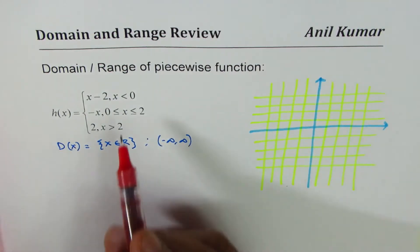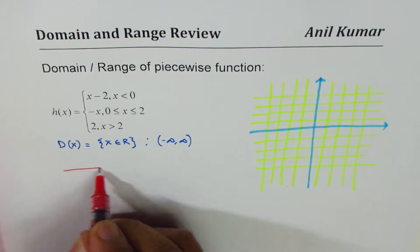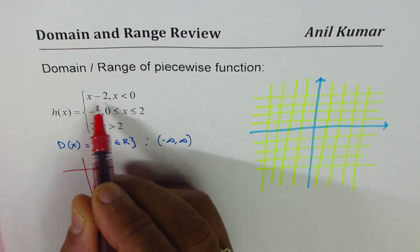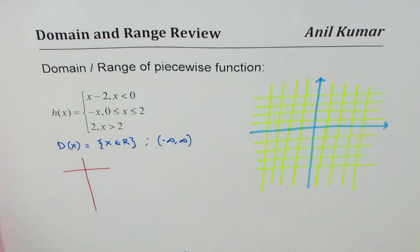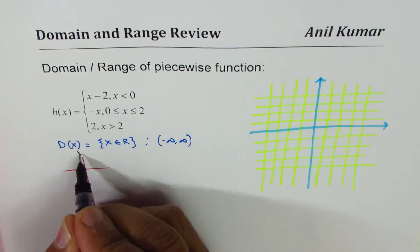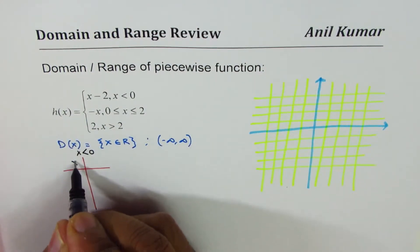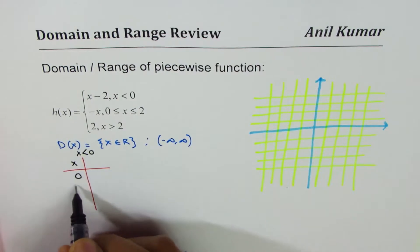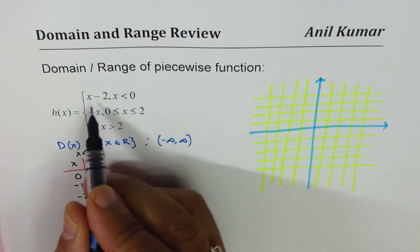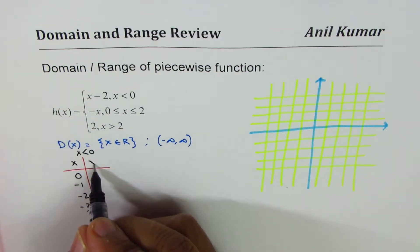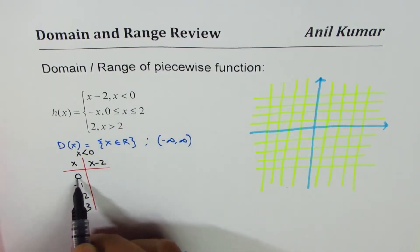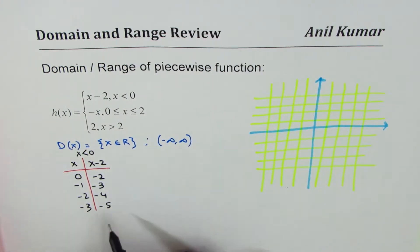To sketch is a good idea to make a table of values. Let's make a table of values for the first one. What we have here is x less than 0, that means the x values could be 0, minus 1, minus 2, minus 3. For these values h(x) is x minus 2, so if I substitute 0 here I get minus 2, minus 1 will give me minus 3, minus 4, minus 5. So these are my values, let's plot them here.